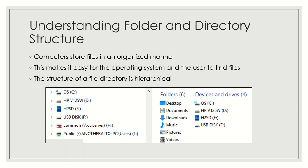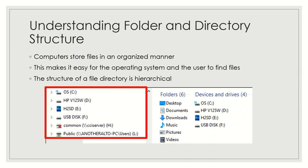This applies to internal storage devices, mapped network folders, and externally connected storage devices as well. For example, in the illustration, drive C is where your hard disk is, drive D is another hard disk or an external hard disk, drive E is an SD card, drive F is a flash drive, and drives H and L are storages from the server.